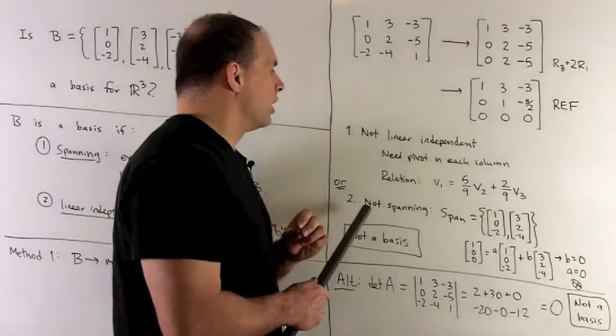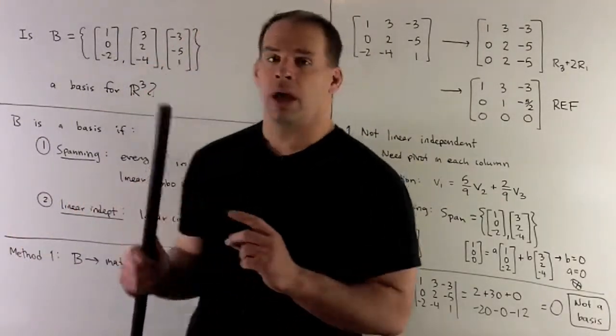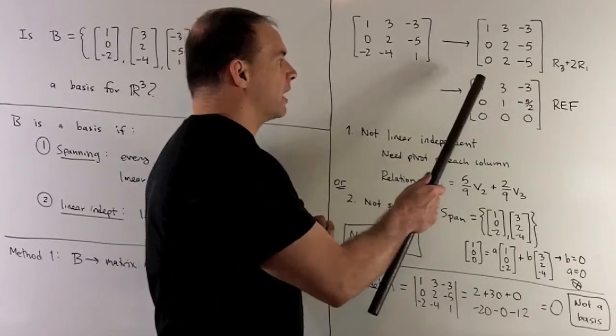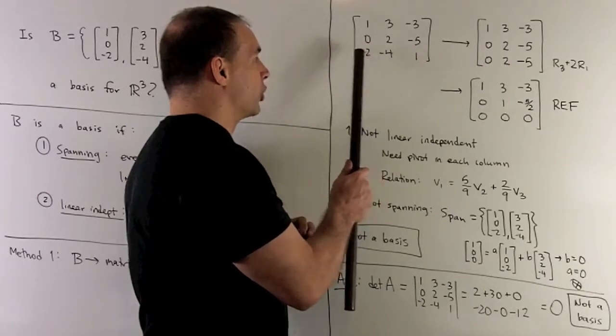For a basis for the span of our three vectors, we just use the first two, because we have pivots in columns one and two. We use the original columns.